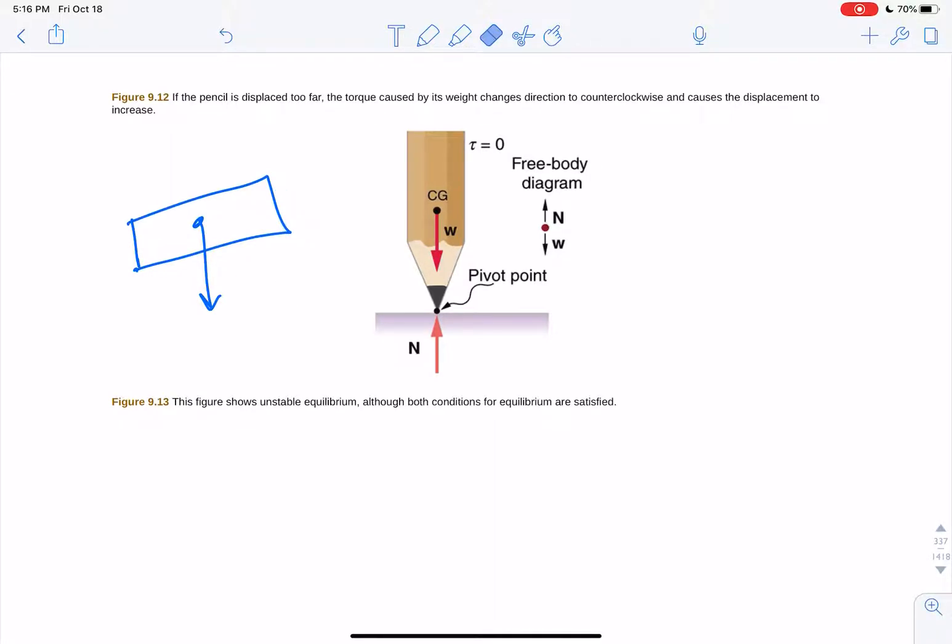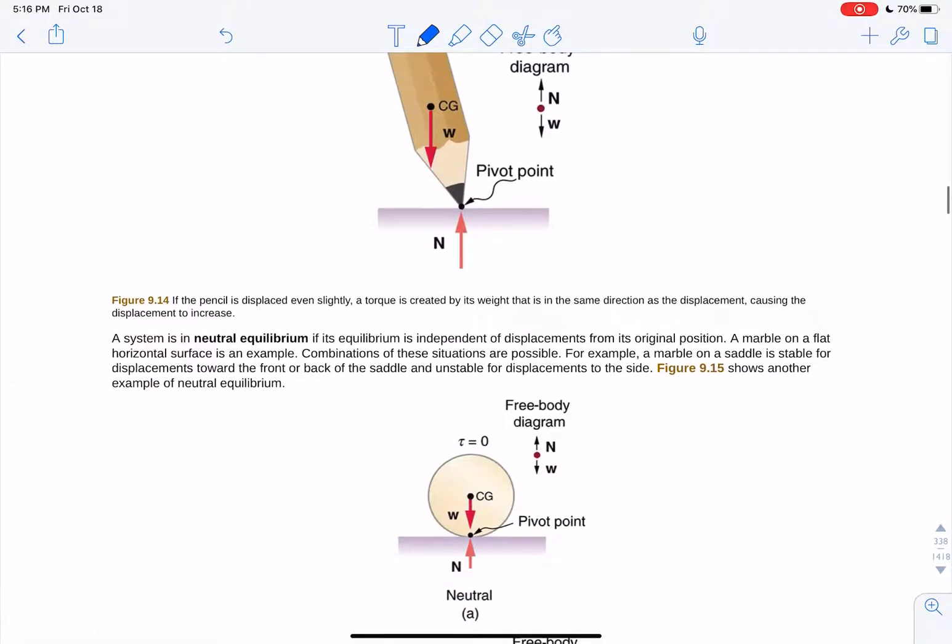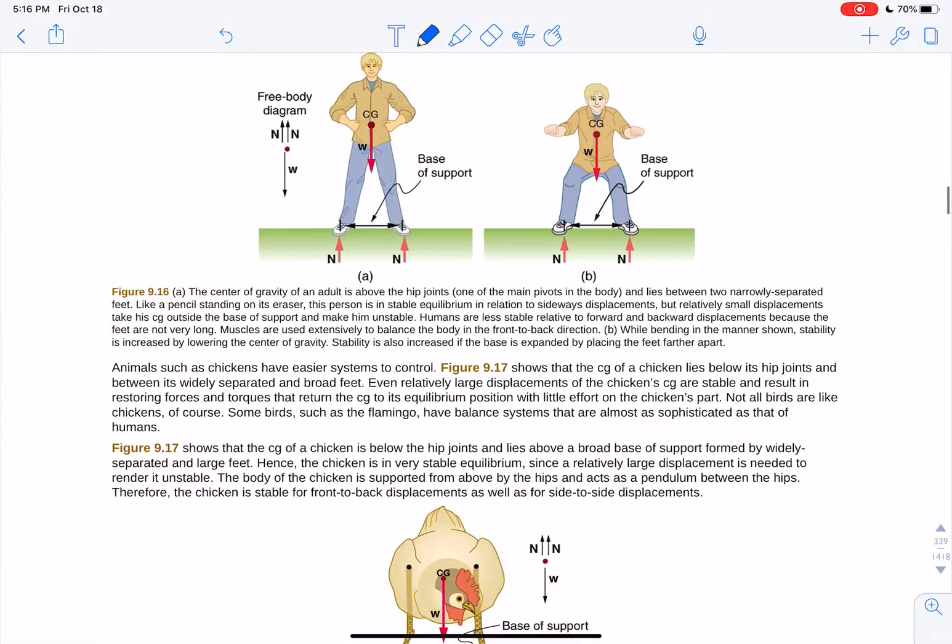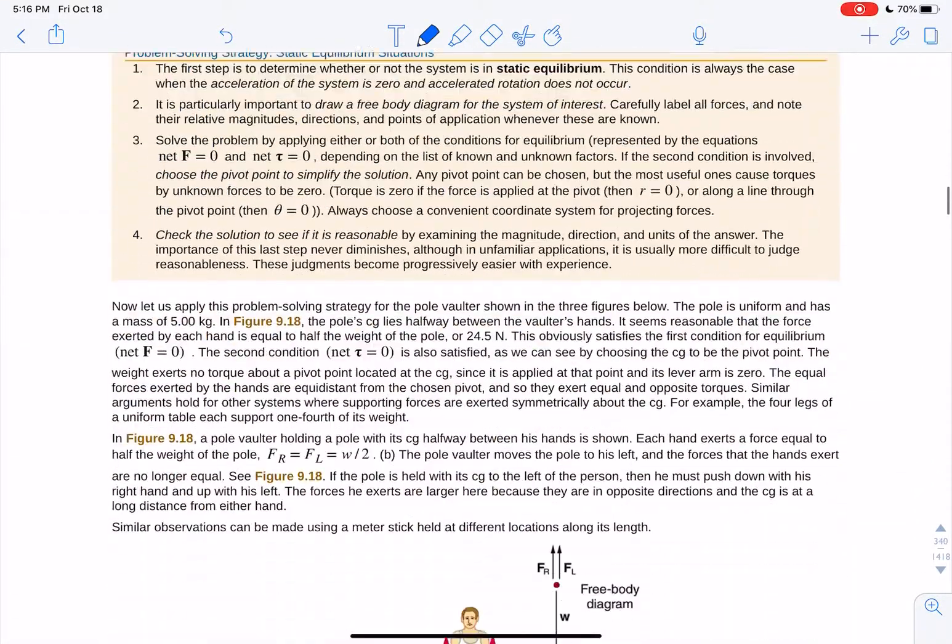Everything falls at the same rate, all parts of it. An object that just falls under gravity is not going to rotate because it's going to feel gravity right at the center, ignoring air resistance. This chapter is just a little bit weird.